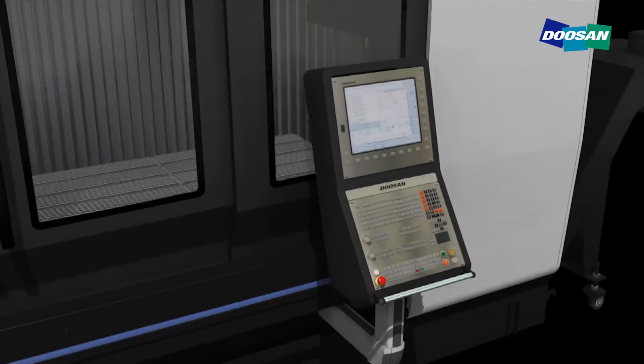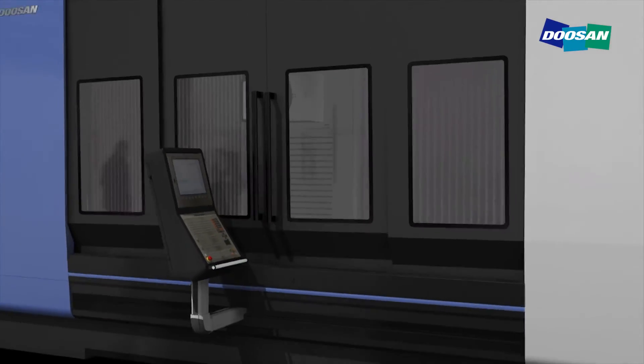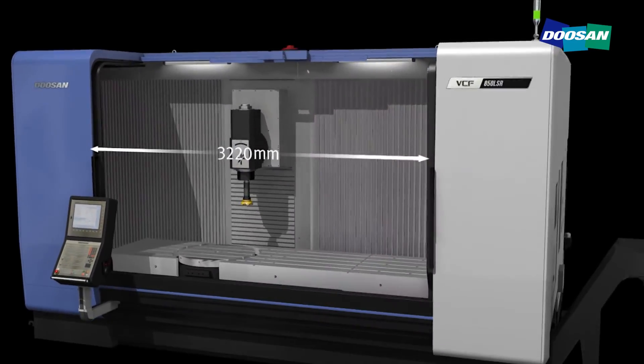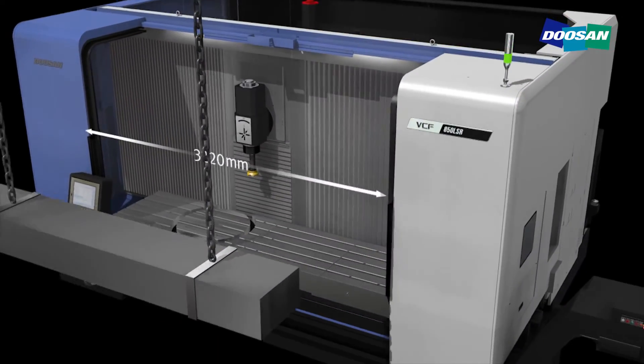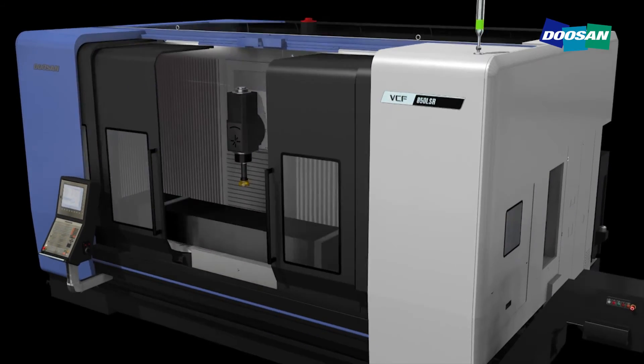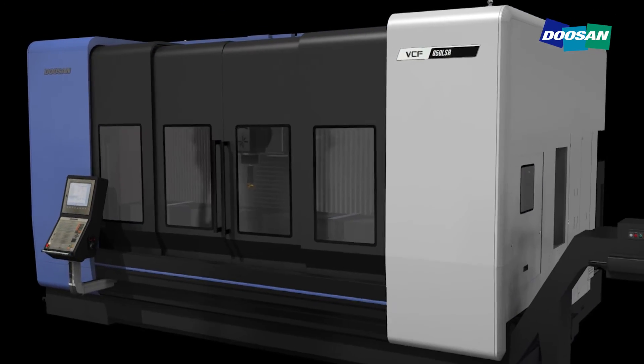The OP panels are movable for operators' convenience. Also, to maximize operators' comfort, the main door can be opened to a maximum length of 3,220 millimeters, which enables operators to load and unload workpieces with a crane.